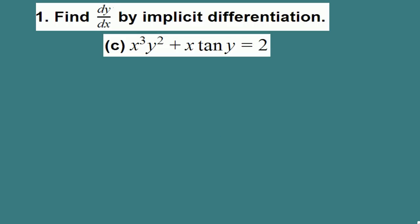We are asked to find dy over dx, denoted in prime notation by y prime. To find dy over dx using implicit differentiation, we take the derivative of both sides — the derivative of the left side and the derivative of the right side.